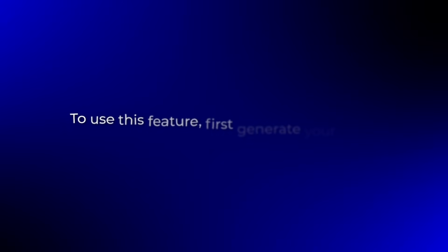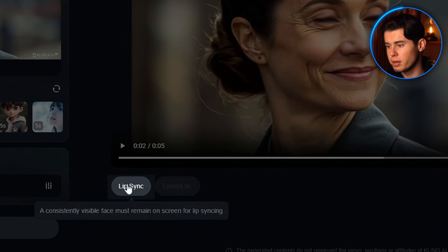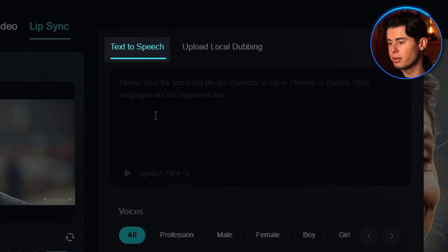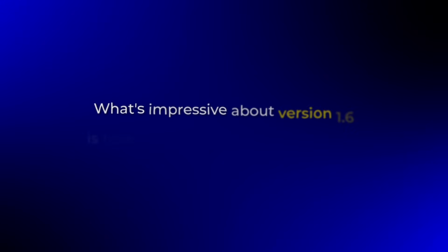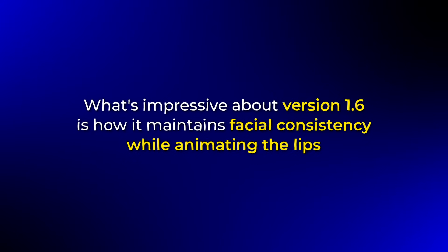To use the lip-sync feature, first generate your video with minimal mouth movement. Once you have your base video, click on the add lip-sync button in the editing panel. You can either upload your own audio file or use Kling's text-to-speech feature. The AI will automatically analyze your audio and create natural-looking mouth movements that match the speech patterns. Version 1.6 maintains facial consistency while animating the lips — no more awkward distortion or unrealistic movements.